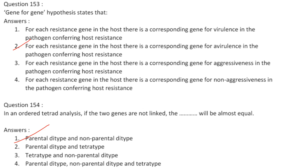In ordered tetrad analysis, if two genes are not linked, the parental ditype (PD) and non-parental ditype (NPD) tetrads will be almost equal. If no crossover occurs or a two-strand double crossover occurs, results resemble parental combinations — parental ditype. If a four-strand double crossover occurs, all products are recombinant — non-parental ditype. When genes are unlinked, PD and NPD tetrads occur in equal frequencies. Answer is option 1.